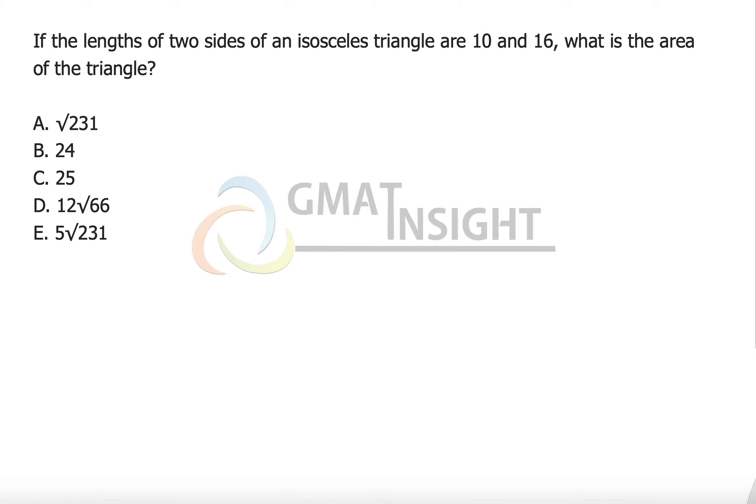If the length of two sides of an isosceles triangle are 10 and 16, what is the area of the triangle? The first thing we need to understand is that since it's an isosceles triangle, there are two possibilities: one is 10, 10, 16, and the second possibility is 10, 16, 16.